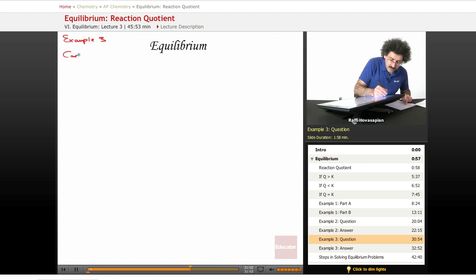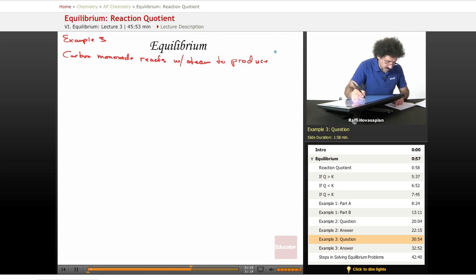Carbon monoxide reacts with steam. This is H2O gas to produce carbon dioxide, carbon monoxide and hydrogen. At 700 Kelvin, the equilibrium constant is 5.10.